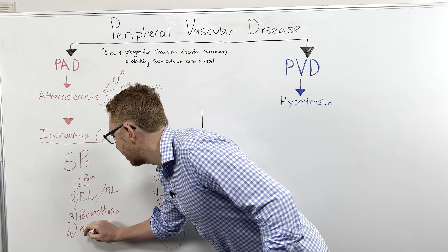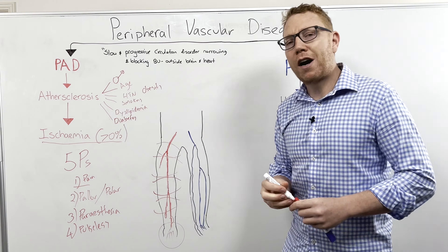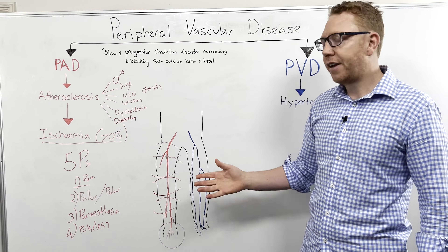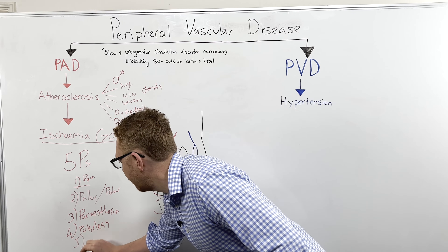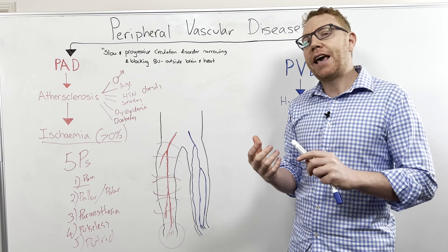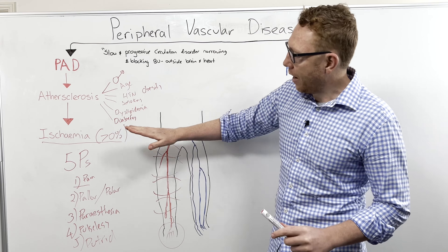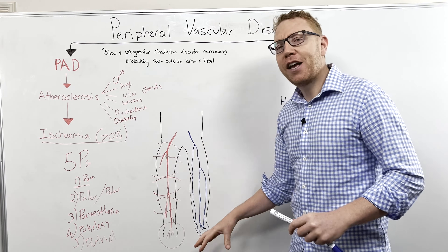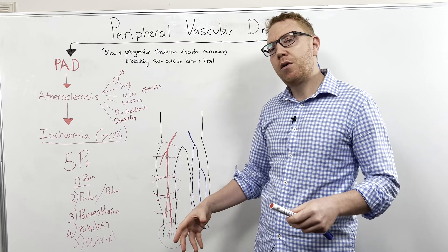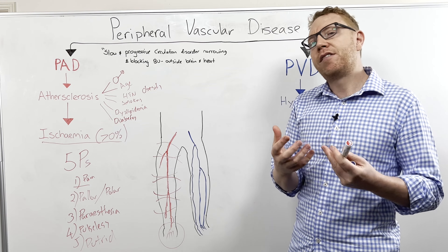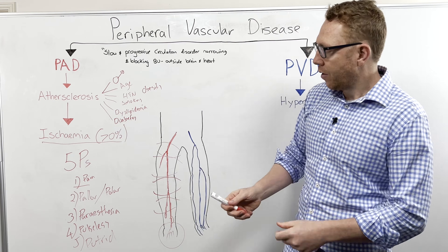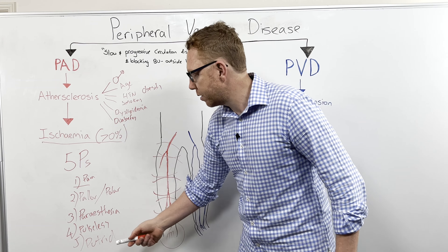Number four is pulseless — when you try to take a pulse, it's either very faint or absent entirely. This could be the tibial pulse or the pedal pulse on top of the foot. Number five is putrid — a placeholder for necrosis and gangrene. When not enough blood reaches the leg, oxygen and nutrients are lacking, causing skin breakdown, poor healing, ulcers that don't heal, infection, necrosis, and then gangrene. So the five Ps are: pain, pallor, paresthesia, pulseless, and putrid.